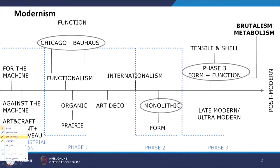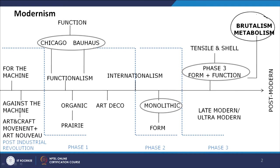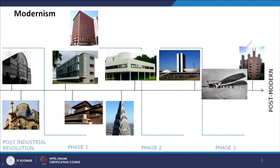Brutalism and Metabolism are together in this last phase of the modern movement, which is just before the postmodern era. In the example of the Richards Medical Lab, when we were discussing it in the Metabolist movement context, we also see that from outside this is only Brutalism, so it can also be considered a Brutalist movement as well.